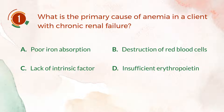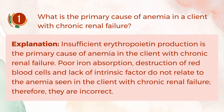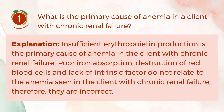The correct answer is D, insufficient erythropoietin. Explanation: Insufficient erythropoietin production is the primary cause of anemia in a client with chronic renal failure. Poor iron absorption, destruction of red blood cells, and lack of intrinsic factor do not relate to the anemia seen in chronic renal failure. Therefore, they are incorrect.